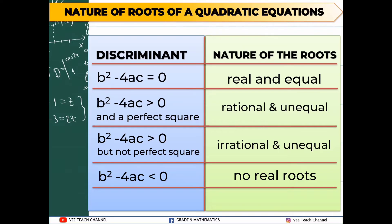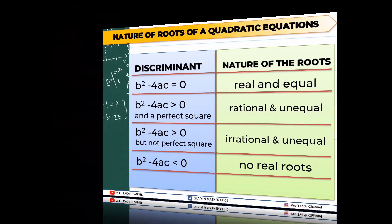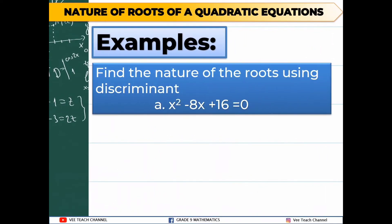We need to remember this table because we will use it later after getting our discriminant. Let's have our example: Find the nature of the roots using the discriminant. Our given equation is x squared minus 8x plus 16 is equal to 0. This is our quadratic equation, and the first thing we will do is find the discriminant.